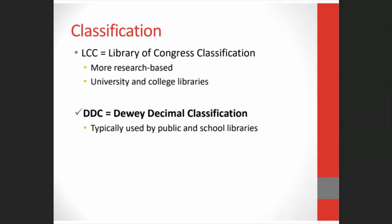LC's classification system reflects their collection, which is more research-based, and it's typically used in university and college libraries. Public and school libraries usually use the Dewey Decimal System. The DDC was developed by Melville Dewey in the 1870s. Dewey was looking for a way to organize all the known information in the world at the time. He did plan for some future knowledge to be added, but had no way of knowing just how much the world would change, so newer fields of knowledge can have some really long numbers.